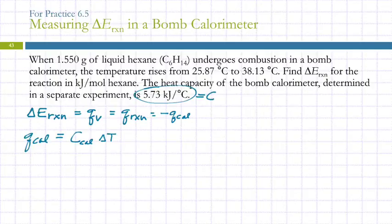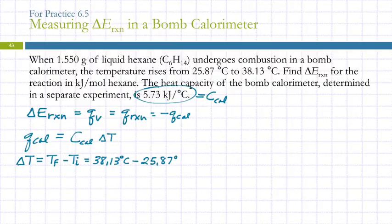We're given the calorimeter constant. This guy right here. That's the calorimeter constant. How do we find the change in temperature? Subtracting. It's final minus initial. So T final minus T initial. And that's important to get that straight, because otherwise you'll have the sign backwards. So the final temperature is 38.13 degrees Celsius. The initial temperature is 25.87 degrees Celsius. 38.13 minus 25.87, 12.26.